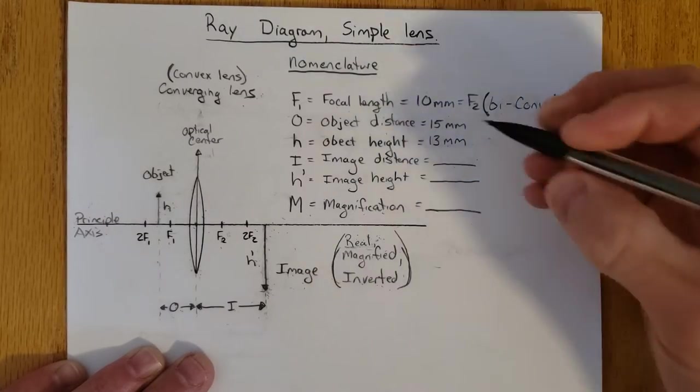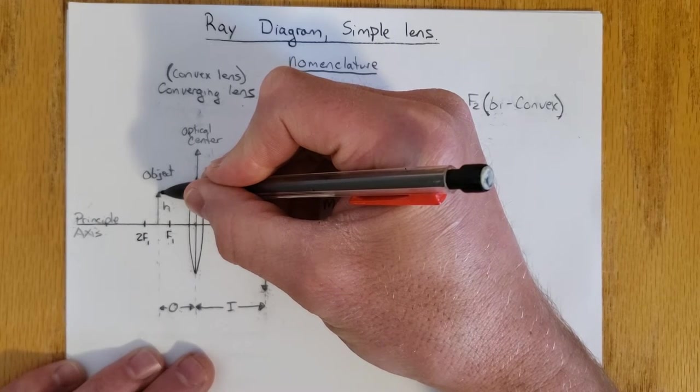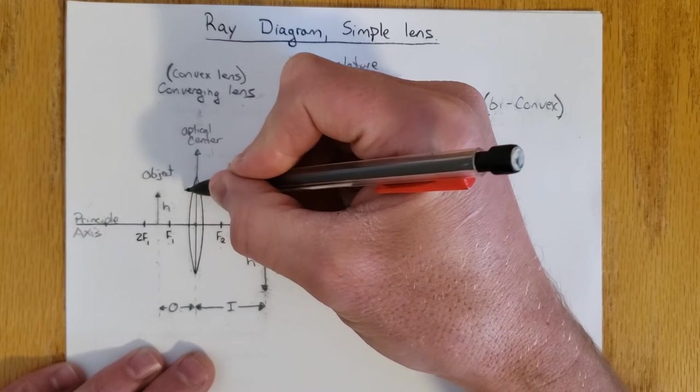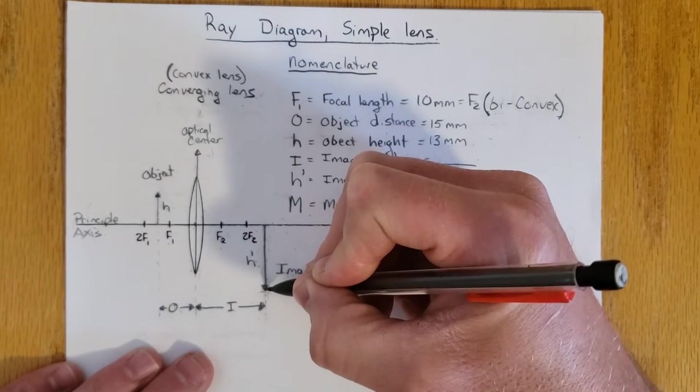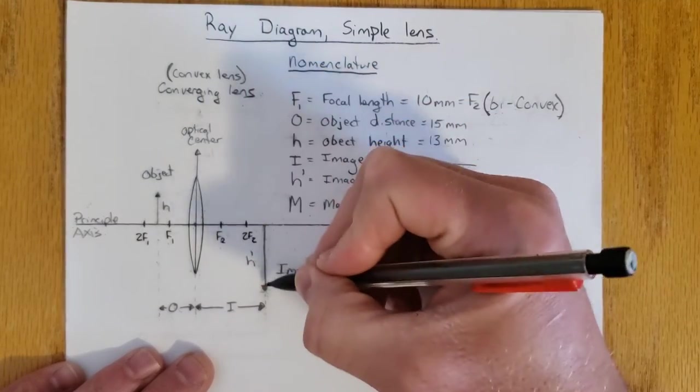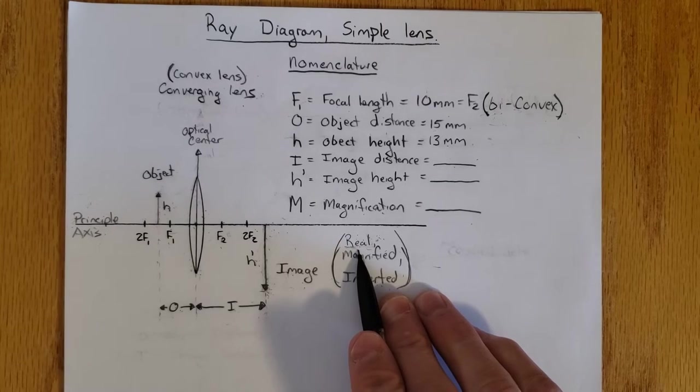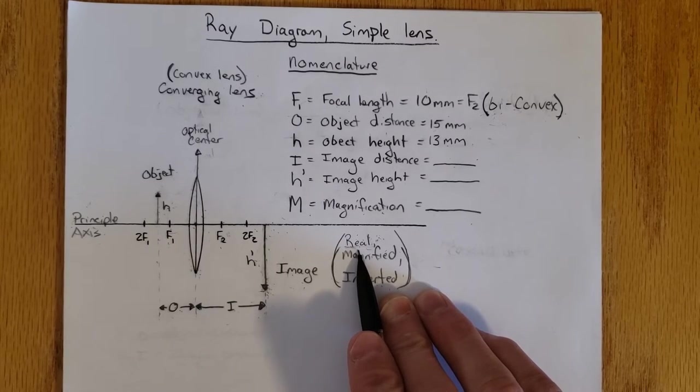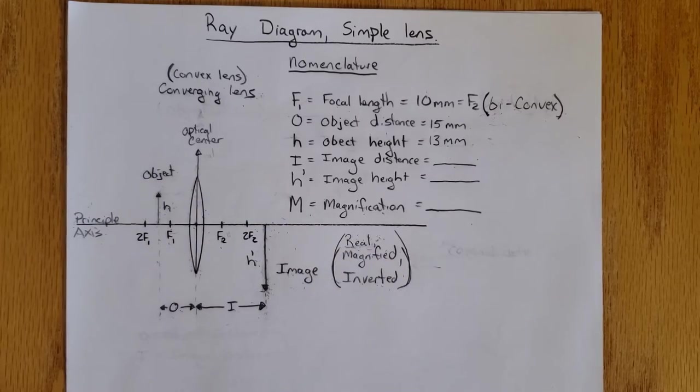All I mean by real is that if we assume that rays of light originate from my object, we can follow those rays of light, diverge, and then converge again on the image plane to create the image. So they're real rays of light that go from the object to the image plane. That is in contradiction to what we would call a virtual image. I won't cover virtual images in this video, but this will be a real image.